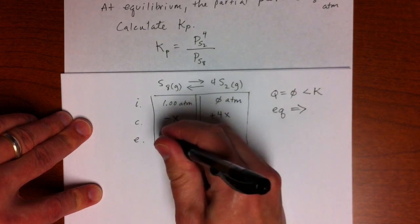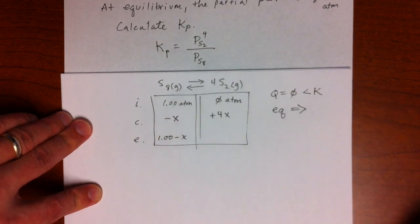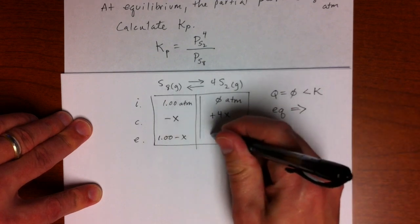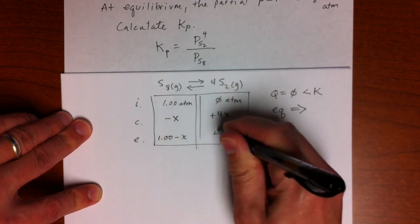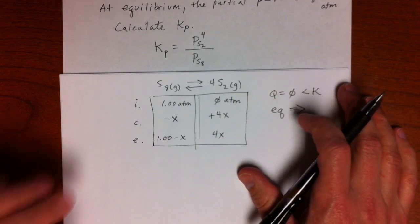So at equilibrium, we have 1.00 minus X for S8 and 0 plus 4X, or just 4X, for S2.